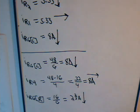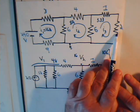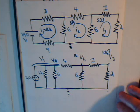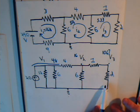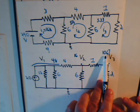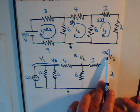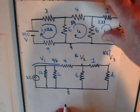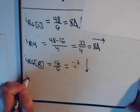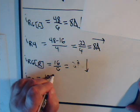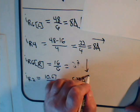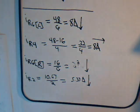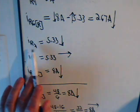Now when we determine it using the mesh current technique, we determined it to be 2.67 amps going down, so they are in agreement with each other. Then we also have this resistor. Using the mesh current technique, it's just simply equal to the mesh current I3, 5.33 amps. Now we're going to determine it using the voltage node technique.